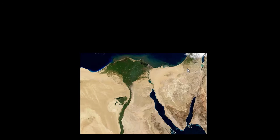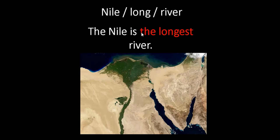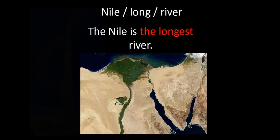Do you know this place? This is Egypt, and you can see a river here. Something is very special about this river — it's called the Nile. Let's make a superlative sentence: the Nile is the longest river. That's right, it's not the Amazon — it's the Nile. Not the biggest, but the longest.